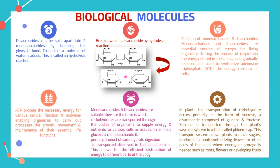Monosaccharides and disaccharides are soluble and are the form in which carbohydrates are transported through the bodies of organisms to supply energy and nutrients to various cells and tissues. In animals, glucose — a monosaccharide and the main product of carbohydrate digestion — is transported dissolved in the blood plasma, allowing for efficient distribution of energy. In plants, carbohydrate transportation occurs primarily in the form of sucrose, a disaccharide composed of glucose and fructose, transported through the plant's vascular system in phloem sap.